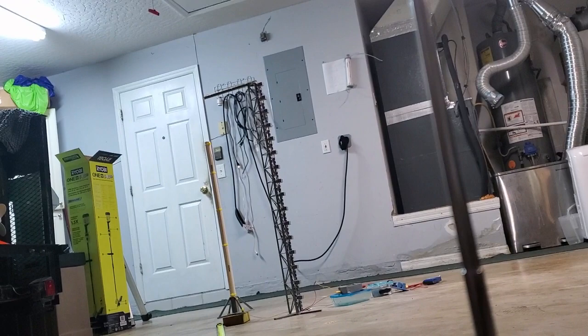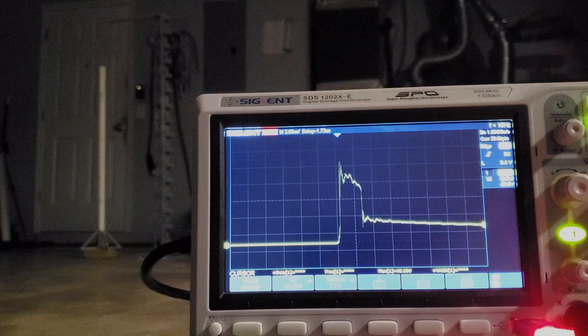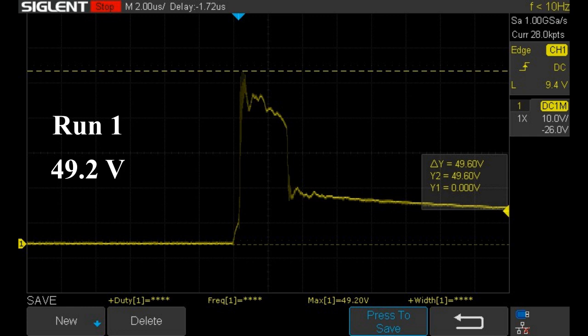This approach proved to be surprisingly effective. At 8 feet away, the antenna recorded a peak voltage of 50 volts. The results were also surprisingly consistent. Three runs back to back looked nearly identical on the scope.